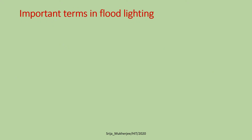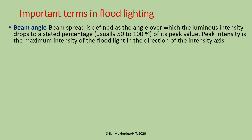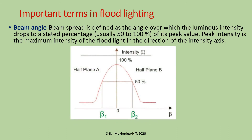Some important terms in flood lighting. First, beam angle: the beam angle or beam spread is defined as the angle over which the luminous intensity drops to a stated percentage, usually 50% or 10% of its peak value. Peak intensity is the maximum intensity of the flood light in the direction of the intensity axis. If we plot intensity with respect to the beam spread from the source of light along the axis, the point where intensity falls to 50% gives us the beam spread and beam angle.